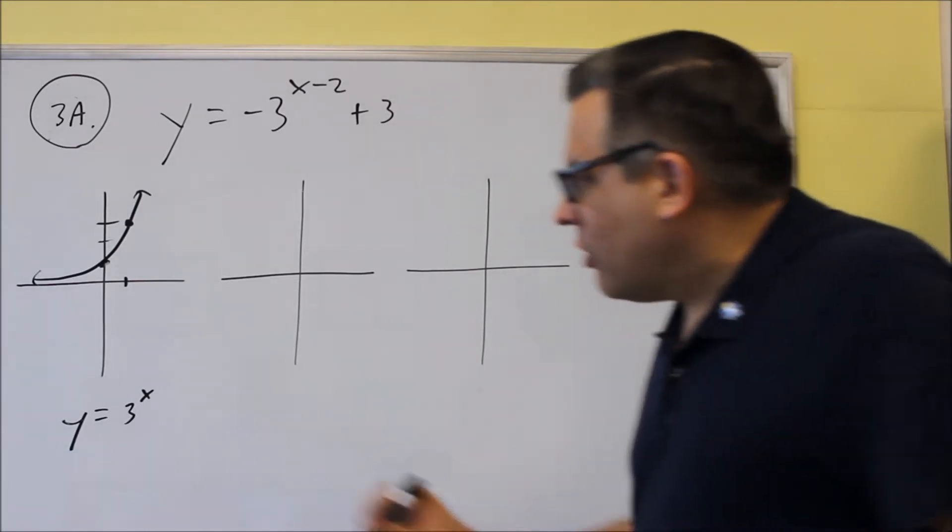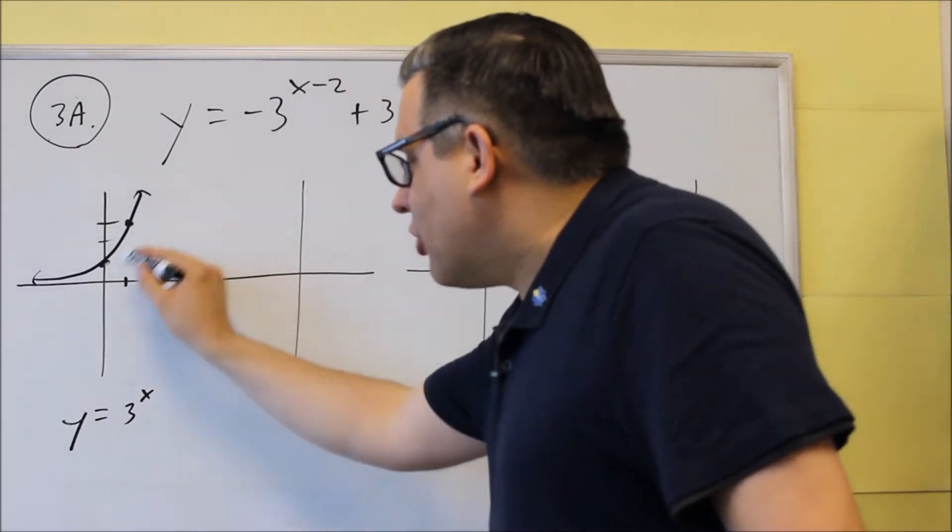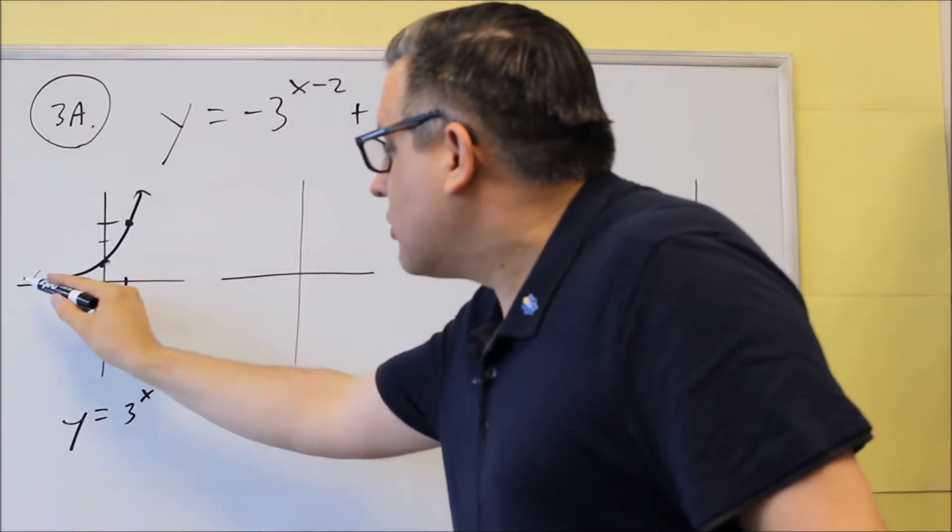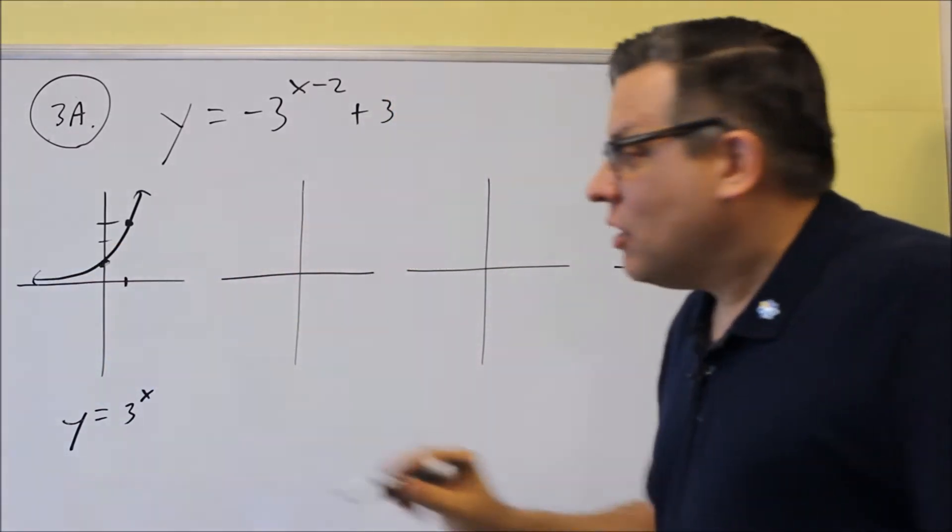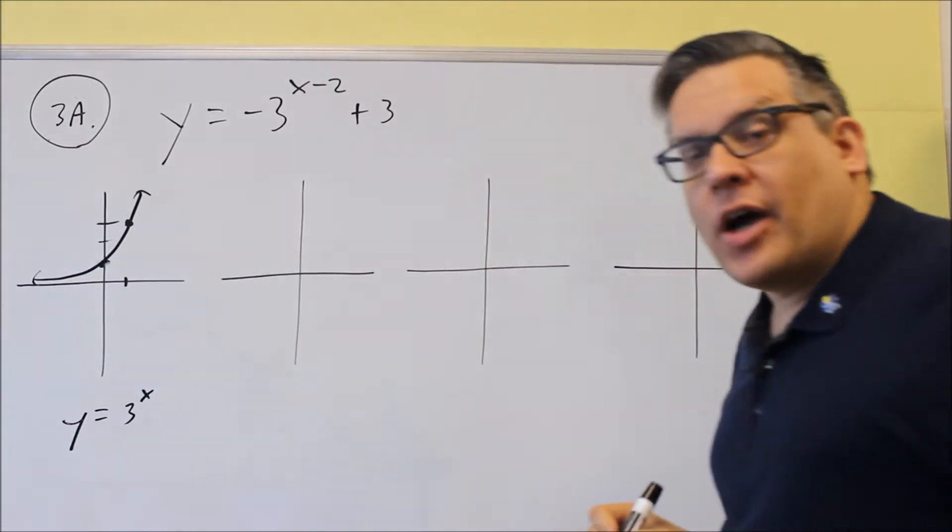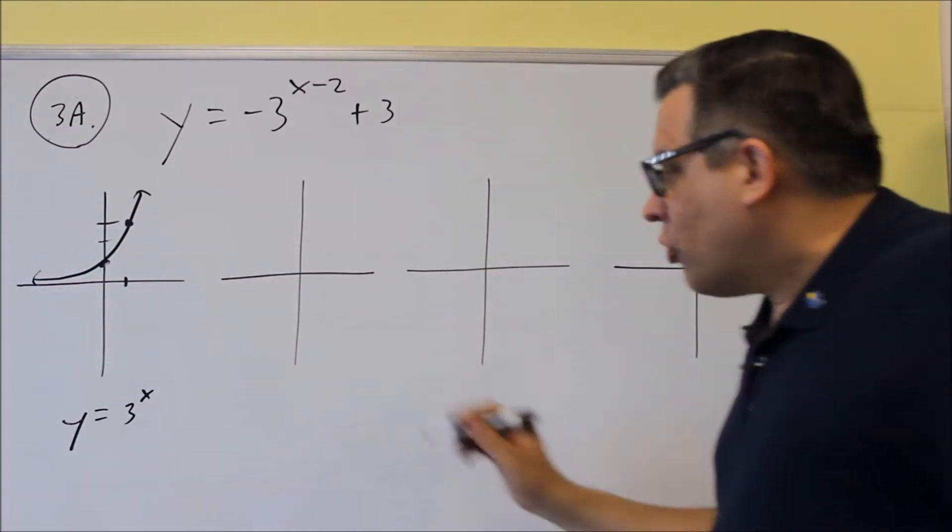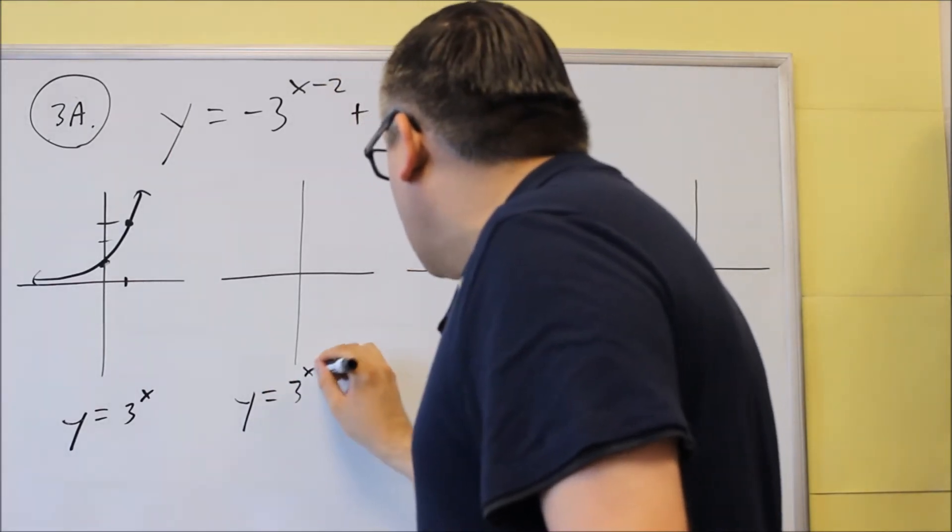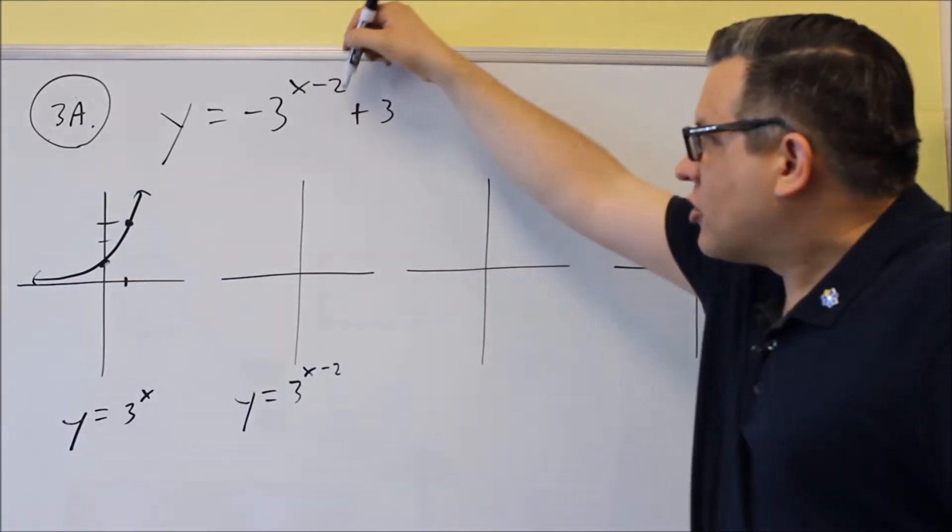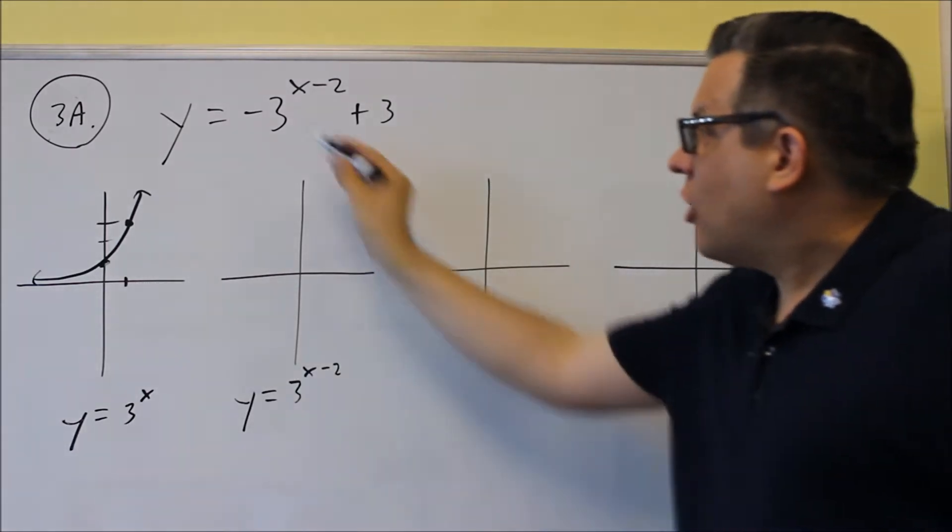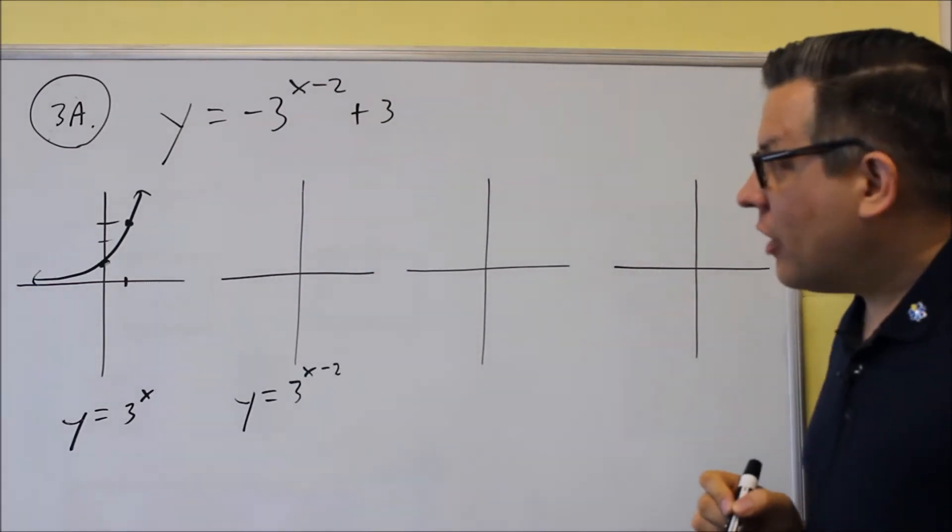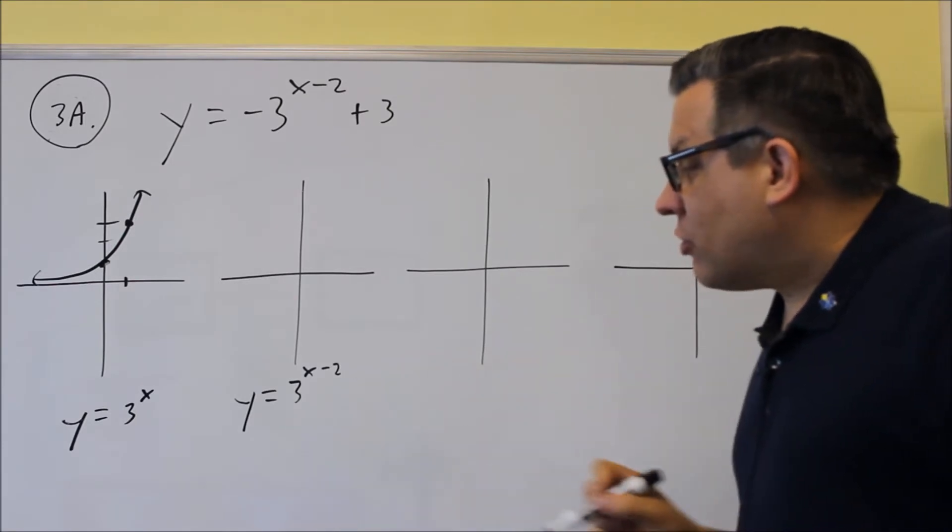Okay, so you can always just put in a 0 and a 1 for x if you're not sure what it looks like and you can get some points, but you know it's got to be one of these. It's going to have a horizontal asymptote and then it's going to go up that way. Now next, we want to do y equals 3 to the x, and this time I'm going to start with the exponent part first, then I'll apply the negative and then finally I'll add 3. So I do 3 to the x minus 2.